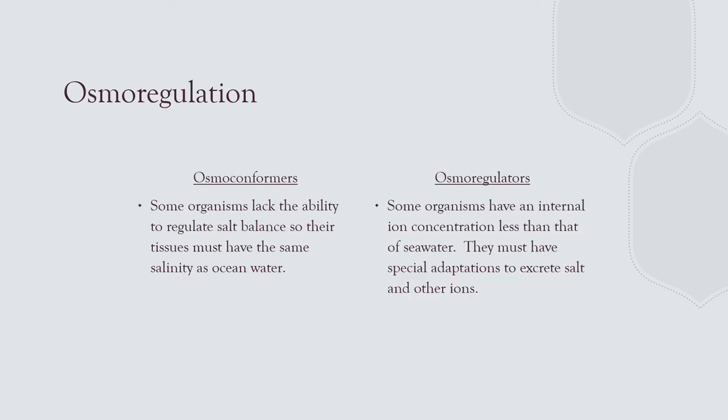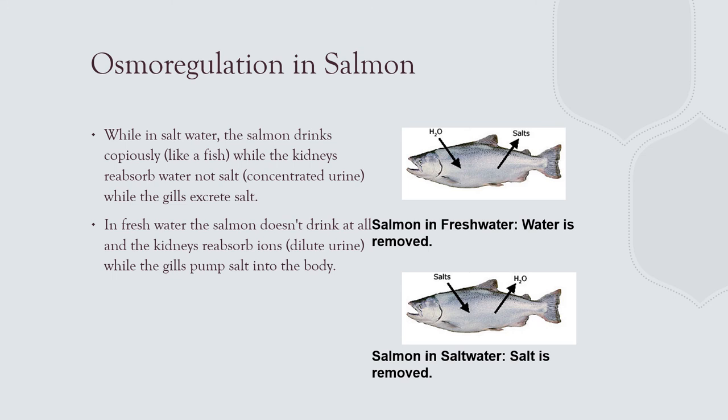Osmoregulation is the movement of ions or water. Some organisms have ionic pumps to concentrate their urine and regulate salt balance. Salmon are a good example: in fresh water, they have very dilute urine and don't drink; in salt water, they drink a lot and produce very concentrated urine to expel salt. Drinking like a freshwater fish means you're alcohol-free — they don't drink at all. These are behavioral adaptations for osmoregulation.